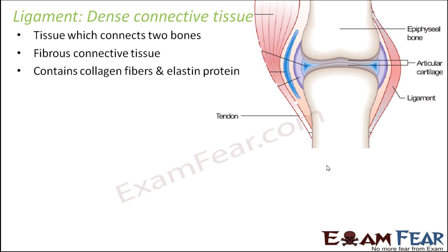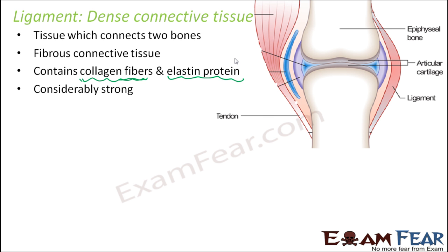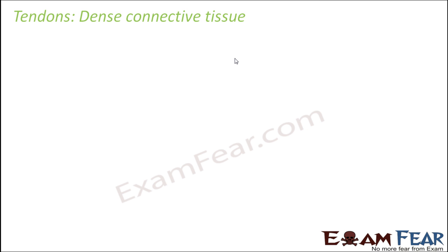Which type of fibers are present in ligament? Mostly collagen fibers and elastin protein — these are the types of fibers mostly present in ligament. They are considerably strong, and it is an elastic tissue with some flexibility. There is little extracellular matrix — not too much extracellular matrix is present here.